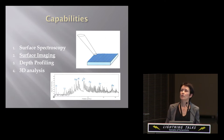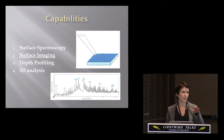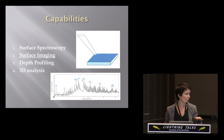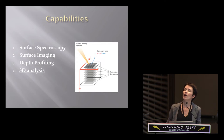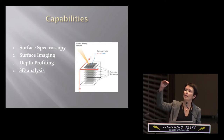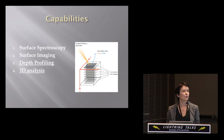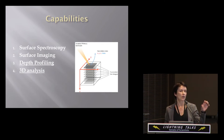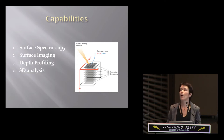The same technique is used for depth profiling. You just mill down, removing this first surface layer, taking an image or spectrum, getting rid of it a little bit more, taking another spectrum or image. And you can actually do 3D analysis, reconstructing and stacking these ion images together to see the 3D shape of the object of interest below the surface of your sample.